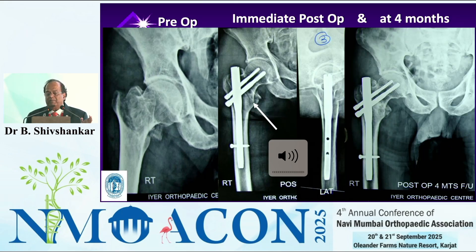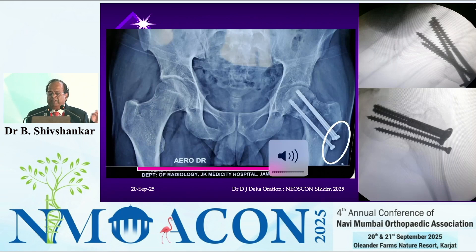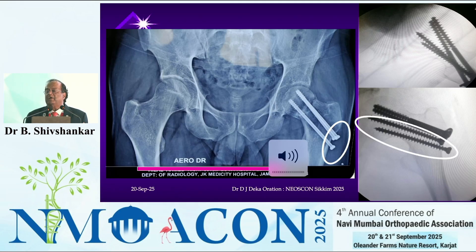On table I achieved compression; at four months when the patient comes the screw head is still retained there — whatever compression I achieved on the table is maintained. This is why the cannulated cancellous screw fails — after the fracture compresses and collapses a bit the screw head no longer has support, that's why they fail. Nowadays we remove one or two partially threaded screws and insert a completely threaded screw so we don't want unwanted collapse to happen.